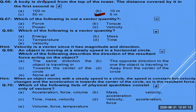Which of the following is a vector quantity? Energy, mass, time, temperature — none of these are vectors. Velocity is the only vector among those options, because velocity has both magnitude and direction.